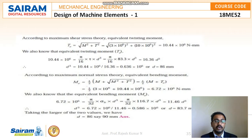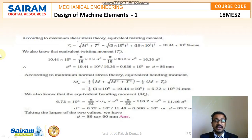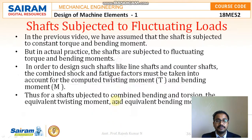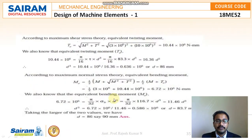Setting Me = (π/32) × σB × D³: 6.72 × 10⁶ = (π/32) × 116.7 × D³, giving D = 83.7 mm. Taking the larger of the two values, the design diameter is 86 mm. Rounding to the nearest standard value from Table 14.4, the shaft diameter is taken as 90 mm. Thank you.